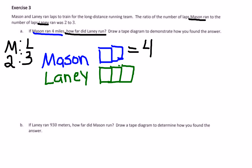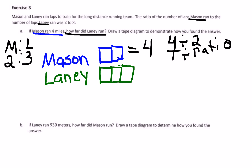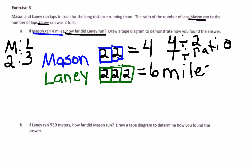Now, in order to figure out what number goes inside those boxes, I look at that 4 and say 4 divided by the ratio. The total divided by the ratio — and the part of the ratio in this case is 2. That's where I got 4 divided by 2. We can all do 4 divided by 2 is 2, so I put a 2 in each box. The rule is, if there is a 2 in one box, all the boxes are the same. So if Mason's are 2, then Lani's also have to be 2. Now I can see that Lani ran 2, 4, 6 — and they're talking about miles. How far did Lani run? Lani ran 6 miles.